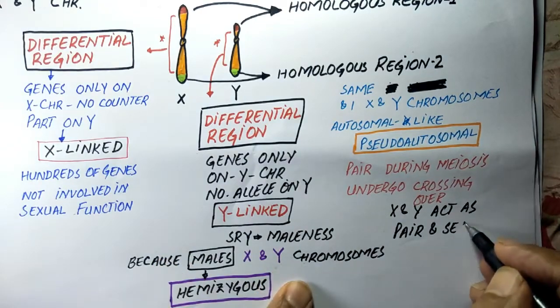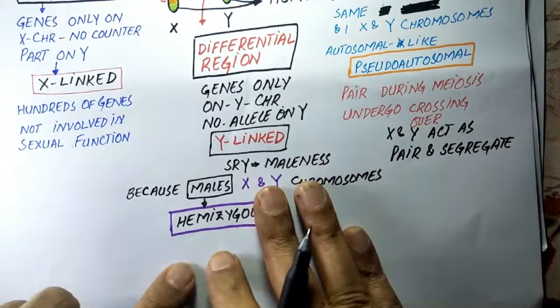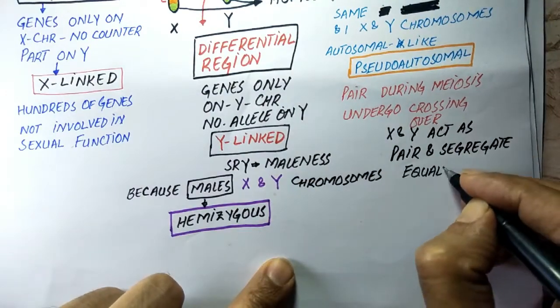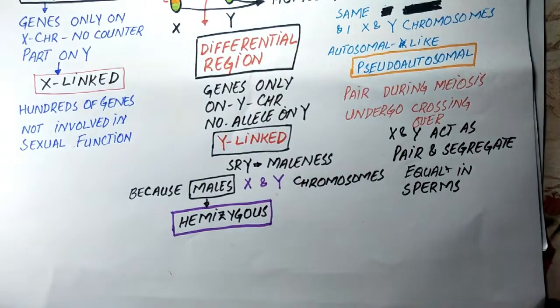These homologous regions are also responsible for equal distribution of X and Y chromosomes in the sperms.